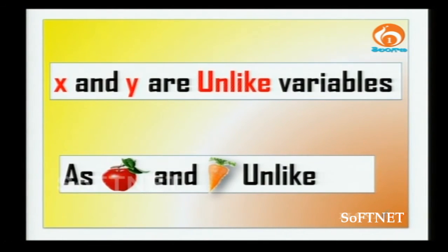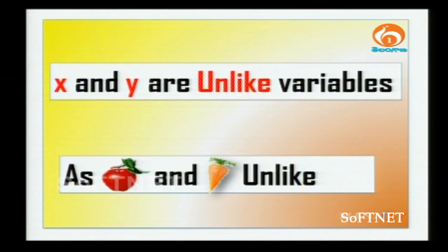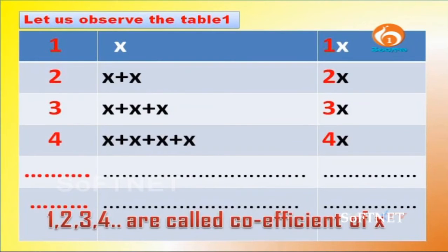If you compare x and y — as we have taken apple and carrot, those two are two different kinds — similarly x and y are two different variables. That is unlike variables. Let us observe the table: x is 1x, x plus x is 2x, x plus x plus x is 3x, x plus x plus x plus x is 4x. Let us observe clearly the last column — the numbers 1, 2, 3, 4.